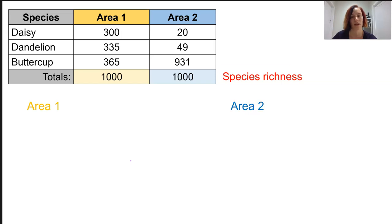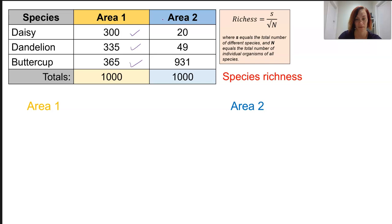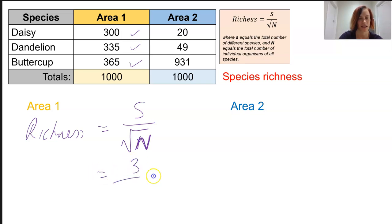Let's look at species richness in area one and area two. Remembering we are using the Menhinick's Index for richness. A simple tally is to say how many species do we have in each area — we've got one, two, three. Our richness M is going to equal S over the square root of N, capital N. We need to be careful with that. S is the total number of different species, so we have three, and capital N is the total number of individual organisms overall.